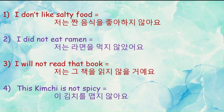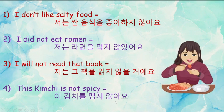Next example is: I did not eat ramen. In Korean: 'chonan ramenul haaji anasayo'. Here conjugation is done in the past tense and 'chi anasayo' is attached to the verb stem. Next example is: I will not read that book. In Korean: 'chonan khuchekul ikchi anayo'. The verb is 'ekta', so the stem is 'ek' and 'chi antha' conjugated in the future tense is attached directly to the stem. Next example is: This kimchi is not spicy. In Korean: 'eek kimchi dil mepchi anayo'. Here the adjective 'meptha' is made negative by adding 'chi antha' directly to the stem of the adjective, so it becomes 'mepchi anayo'.